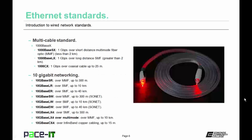Now let's move on to the multi-cable standard — that's 1000BaseX. Under this standard, there's 1000BaseSX, which is 1 gigabit per second networking over short-distance multimode fiber, usually less than 2 kilometers. Then there's 1000BaseLX, which is 1 gigabit per second over long-distance single-mode fiber, usually greater than 2 kilometers. Finally, there's 1000BaseCX, which is 1 gigabit per second over coaxial cable up to 25 meters long.